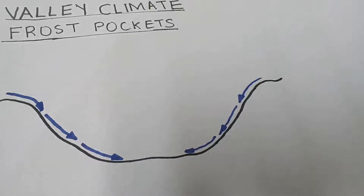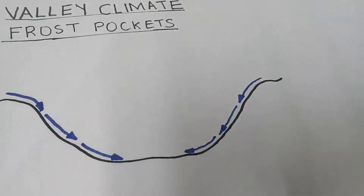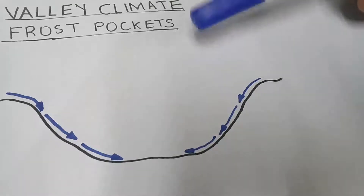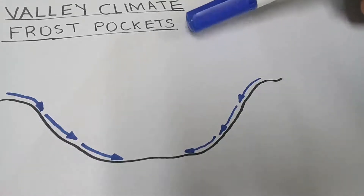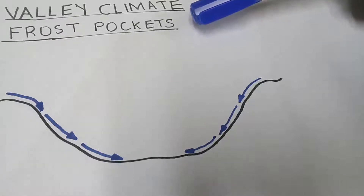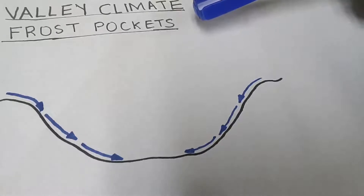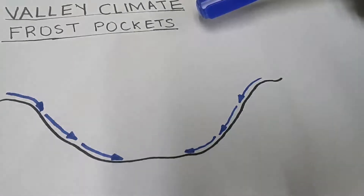Today we're going to be discussing a lesson on our valley climate which are frost pockets. We're going to be discussing this very easy topic today. Frost pockets usually come out during exams — March examinations, June examinations, trials, and even your finals. Frost pockets always come out.